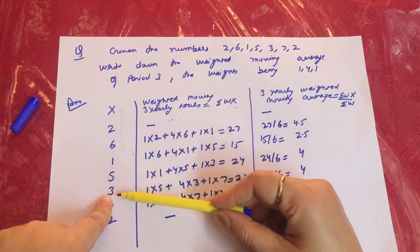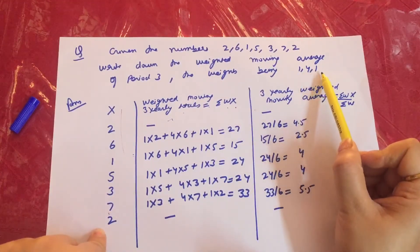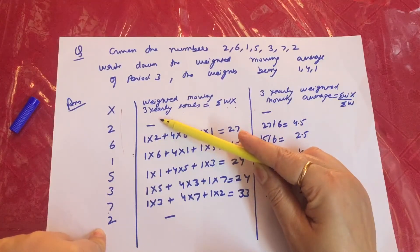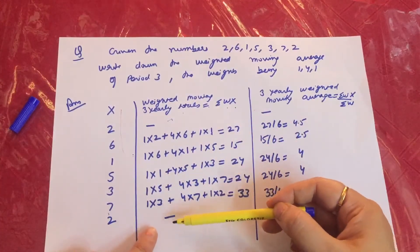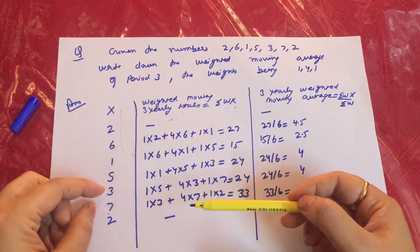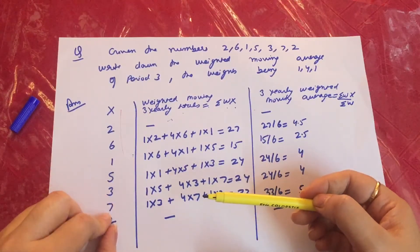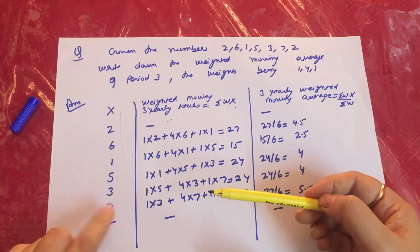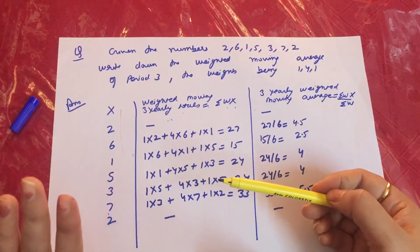Next: 3 into 1 plus 7 into 4 plus 2 into 1 is equal to 33. As I mentioned in my previous lecture, whatever values you leave at the top, the same number will be left automatically at the bottom as well, because of the 3-3 grouping pattern.